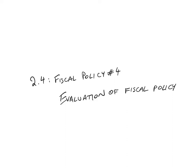This will be the final video of the fiscal policy mini-series — the fourth and final video — which is Unit 2.4 of the IB Macroeconomics syllabus. In this video, I'm going to conduct an evaluation of fiscal policy, looking at its advantages and disadvantages, strengths and weaknesses or limitations. Let's get started.